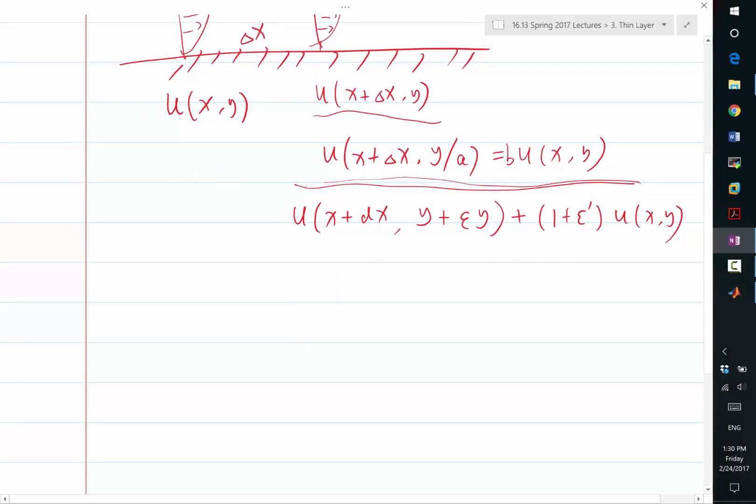Now, let's expand this derivative out, so we get partial u partial x times dx plus partial u partial y times epsilon y. So this is plus epsilon y, this is plus dx, so I have dx here.